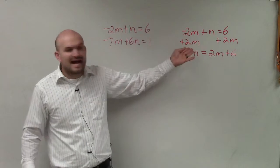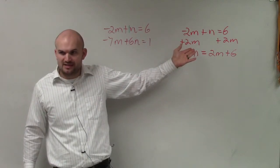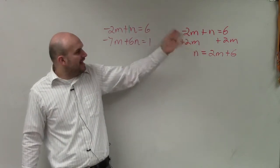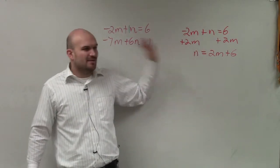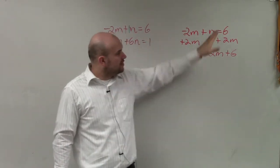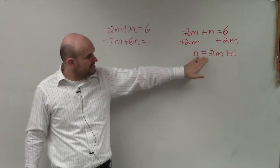And the reason why we like finding the variable that has a coefficient of 1 is because it's very easy to solve for that variable. All I had to do to solve for this variable was add 2m to both sides. You guys see that? It's very simple. If it had a coefficient of another number, then I'd have to divide by that number, and it could get messy from there. So solve for your variable that has a coefficient of 1.